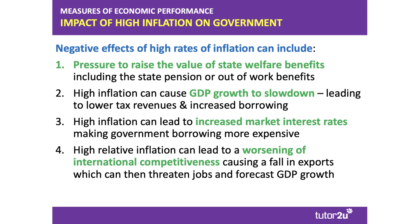For example, the government has a lock on pensions whereby the pension rises in line with inflation, or two and a half percent, or average earnings — whichever is the higher. But typically when there's high inflation, the government tends to have to pay out more in welfare benefits, and that's going to cause an increase in government spending and potentially an increase in the budget deficit.